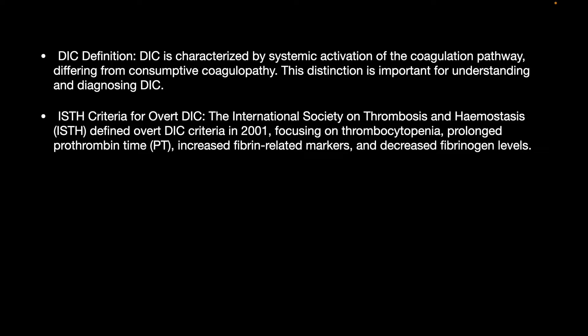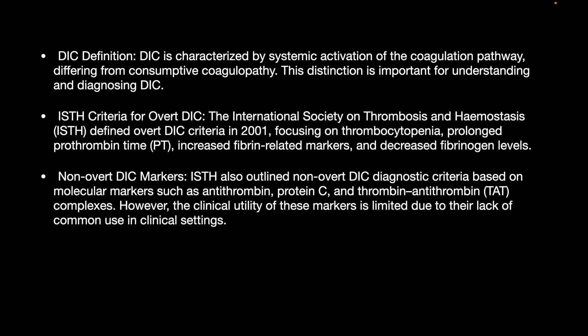The International Society of Thrombosis and Hemostasis (ISTH) defined overt DIC criteria in 2001, focusing on thrombocytopenia, prolonged prothrombin time, increased fibrin-related markers, and decreased fibrinogen levels. ISTH also outlined non-overt DIC markers — a diagnostic criteria based on molecular markers like antithrombin, protein C, and thrombin-antithrombin complex. However, the clinical utility of these markers is limited due to their lack of common use in clinical practice.